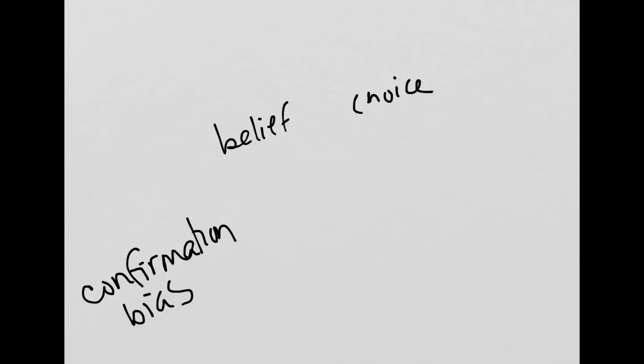An interesting example of a reinforcing loop occurs in our own minds, and this is what we tend to refer to as the confirmation bias. Confirmation bias simply means that when we take in information, we generally take in or prefer the information that's already aligned with our existing views.